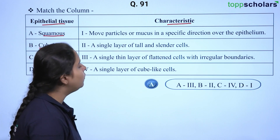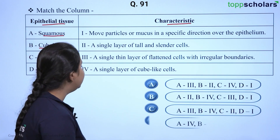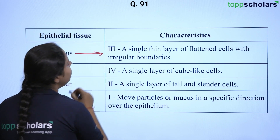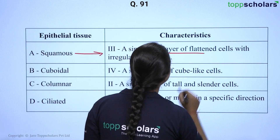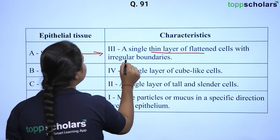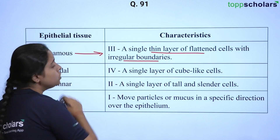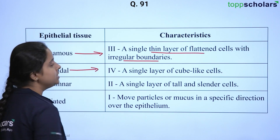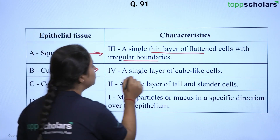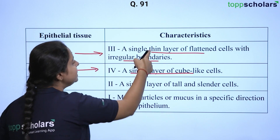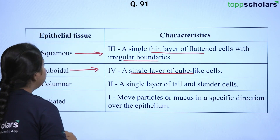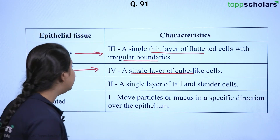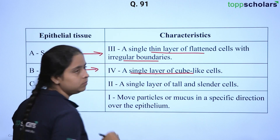In the options you will be provided with different combinations and you need to choose the correct matched pairs. Squamous epithelium is a single thin layer of flattened cells with irregular boundaries — also known as simple squamous epithelium. Cuboidal epithelium, as the name suggests, consists of cube-like cells — a single layer of cube-like cells. This single layer is important because we have stratified epithelium also, wherein many or multiple layers are present.